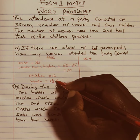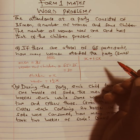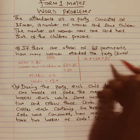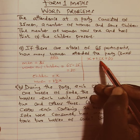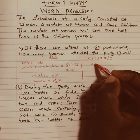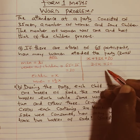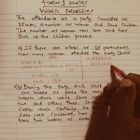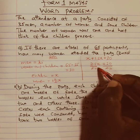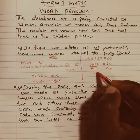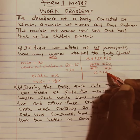So that is x plus 1.5x, which gives us 2.5x, and 2.5x is equal to 30. To get the value of x, we divide both sides by 2.5. So x equals 30 divided by 2.5, and this gives us 12.